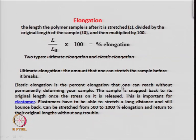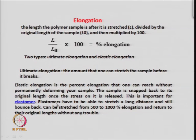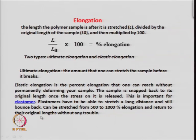Elastic elongation is how much you can elongate a material such that it returns to its original self, while ultimate elongation is the point beyond which the material will break. Materials called elastomers can stretch to very high elastic elongation — around 500 to 1000 percent — and still return to their original lengths.